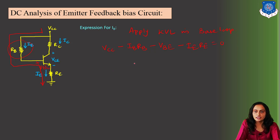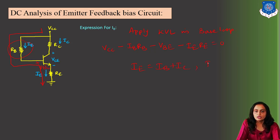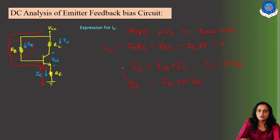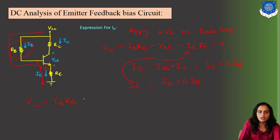Now we want to find the base current. We have one term that is IE·RE, so we will replace IE with IB + IC. We also know that IC = β·IB, so we can write IE = IB + β·IB. Substituting into the equation: VCC minus IB·RB minus VBE minus (IB + β·IB)·RE equals zero.